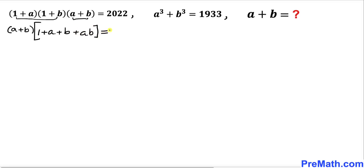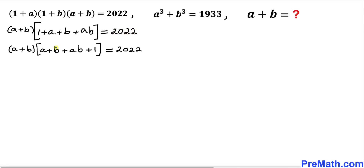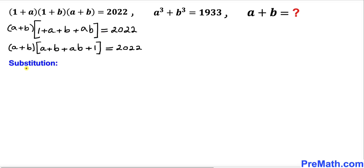That equals 2022 on the right hand side. In the next step I have rearranged everything inside the bracket, putting a+b at the very first place and moving the 1 to the end.